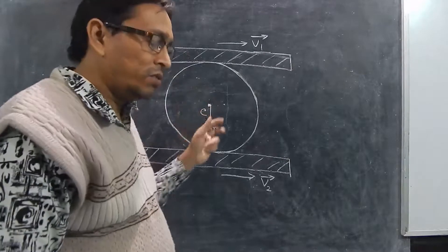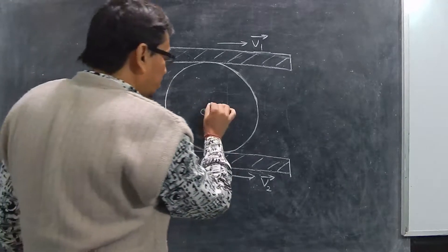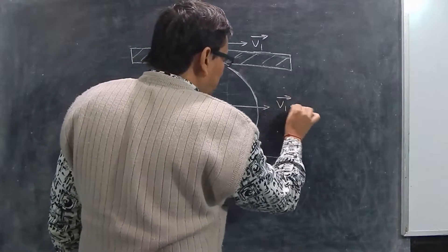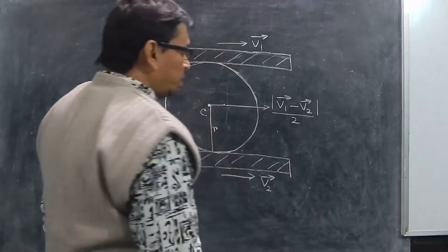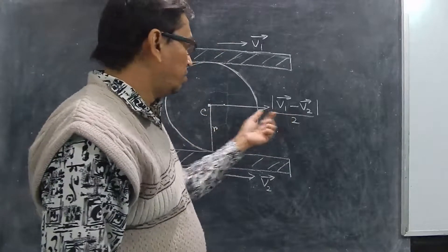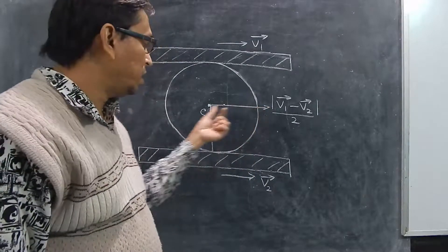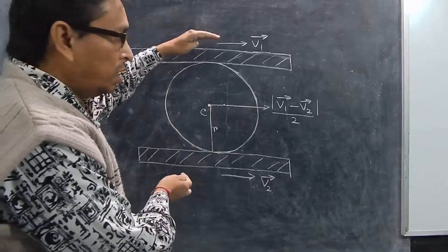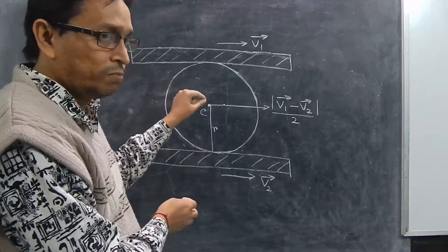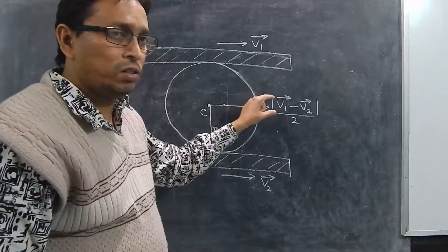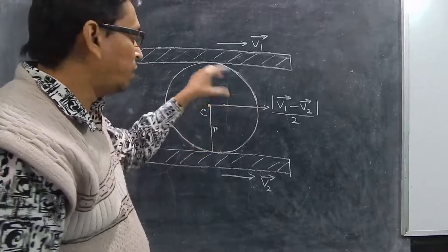First, we have to find out the velocity of the center of mass. The center of mass will have a velocity given by |V1 − V2| divided by 2. One important point: this velocity is with respect to the system — it is not the velocity seen from the external frame. Once we find the velocity of the center of mass, we do V by R to find the omega of the disc.